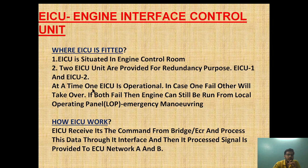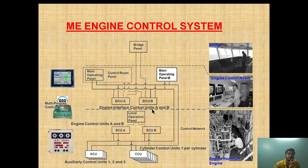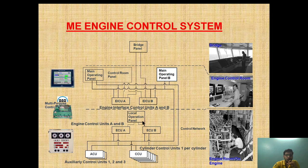At any one time, only one EICU is operational. In case one fails, the other will take over. If both fail, the engine can still be run from the local operating panel via emergency maneuvering — very important. If both EICU A and EICU B fail, control can be taken to the LOP, meaning the local operational panel. Control transfers from the engine control room to the emergency maneuvering platform, and from there commands can still be given to ECU A and ECU B.